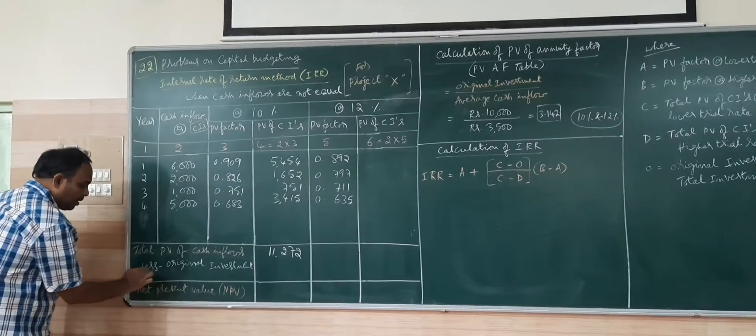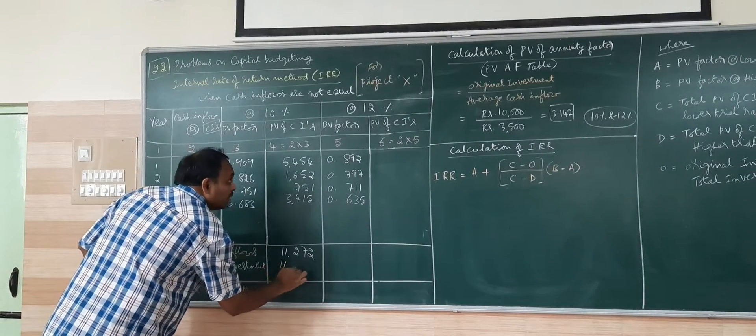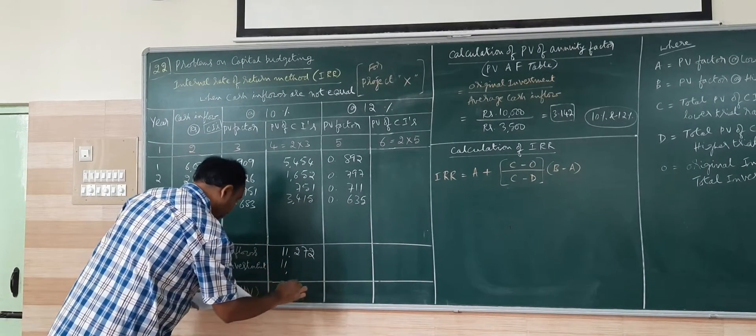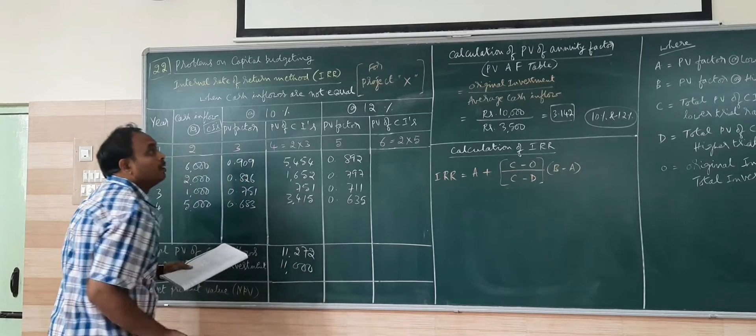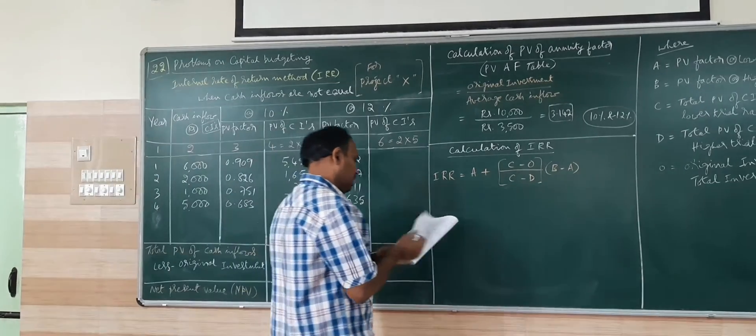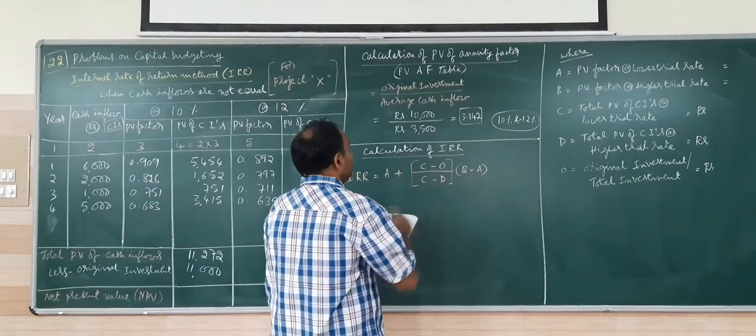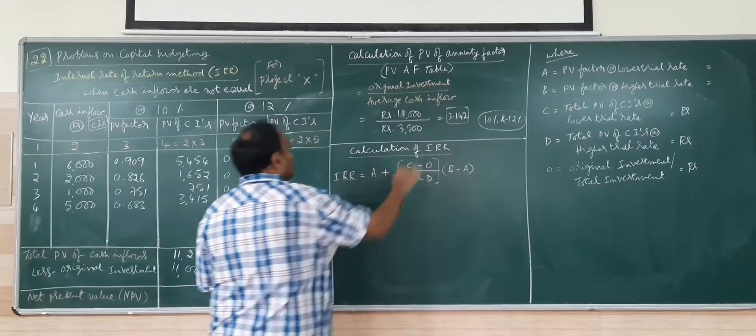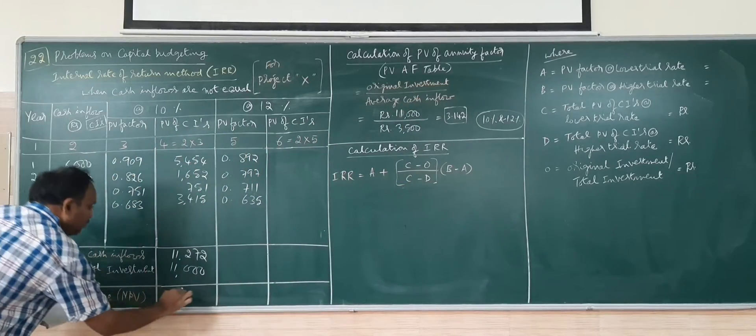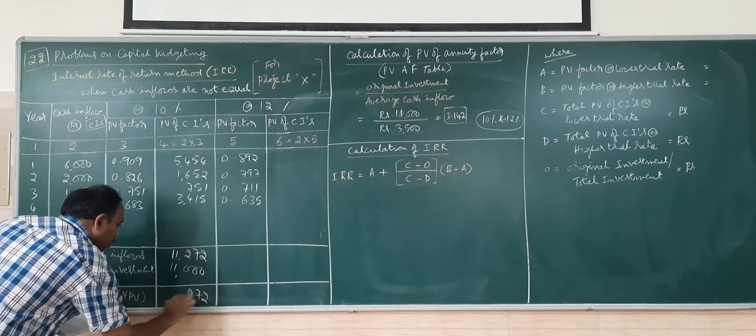5454, 1652 for 2nd year, 751 for 3rd year, 3415 for 4th year. If I add, I get 11,272 as total PV of cash inflow. Then less initial investment. Initial investment is 11,000. I get 272 positive.